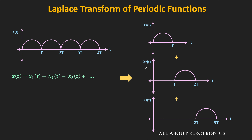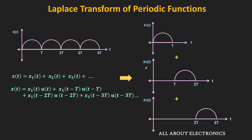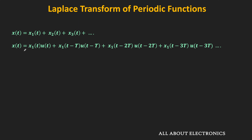So we can say that x(t) equals x1(t) plus x2(t) plus x3(t) plus so on. Mathematically, x2(t) is x1(t minus T), existing only for t greater than or equal to zero. Similarly, x3(t) is x1(t minus 2T). Adding all these time-shifted versions of x1(t) gives us x(t). Now let us take the Laplace transform of each term, so the Laplace transform of x(t) will be equal to X(s).